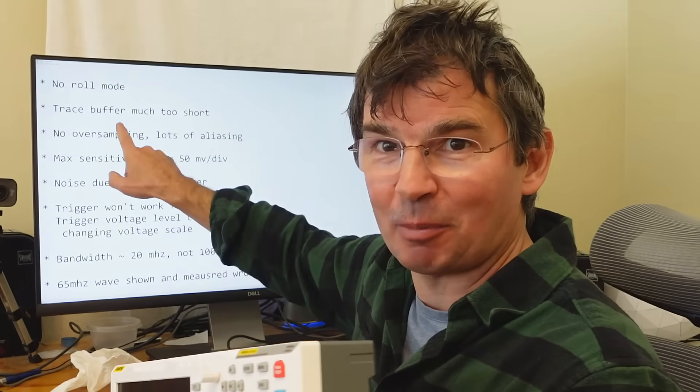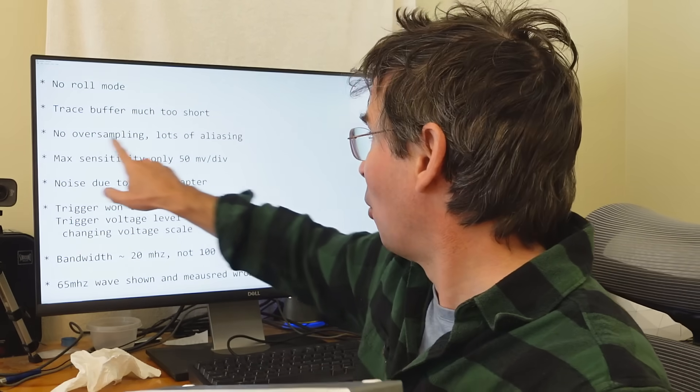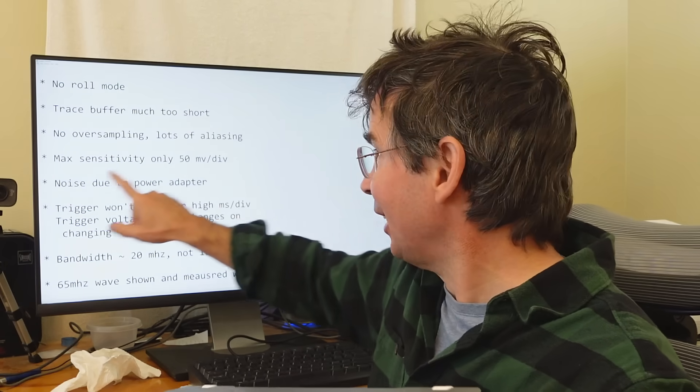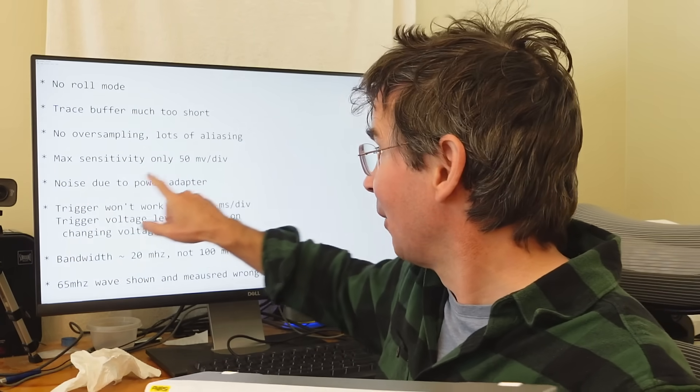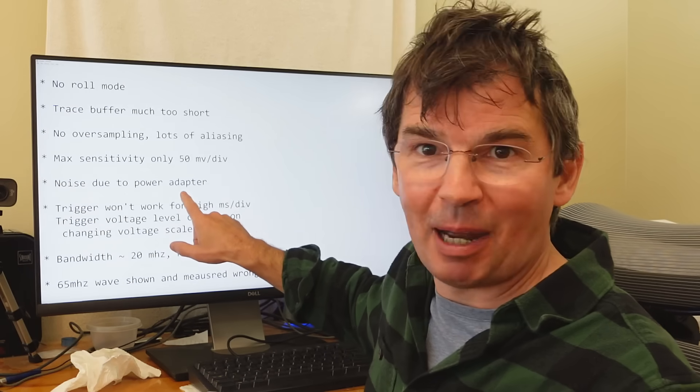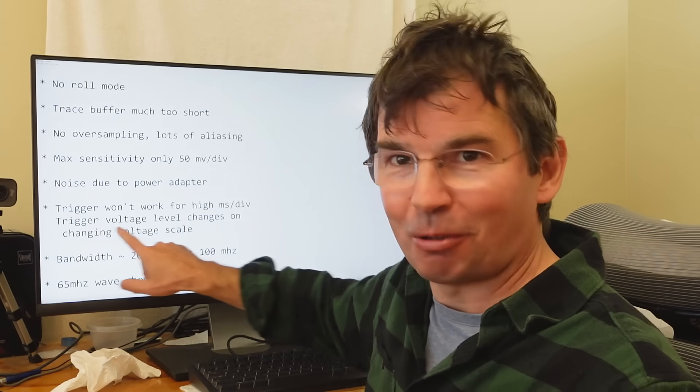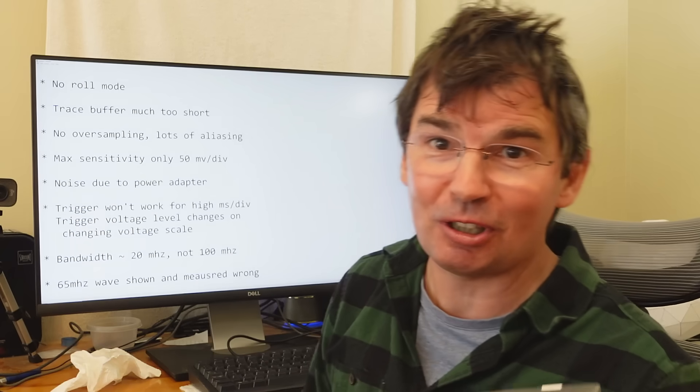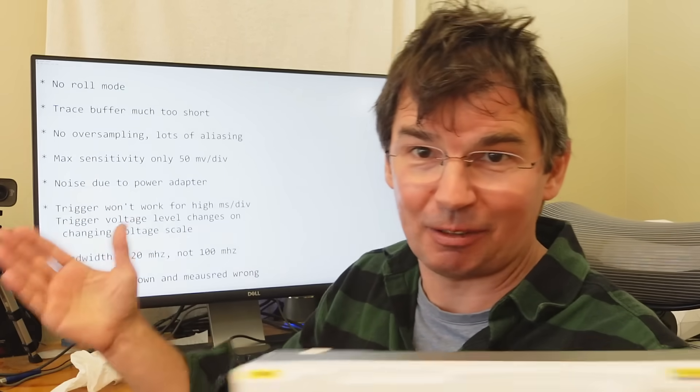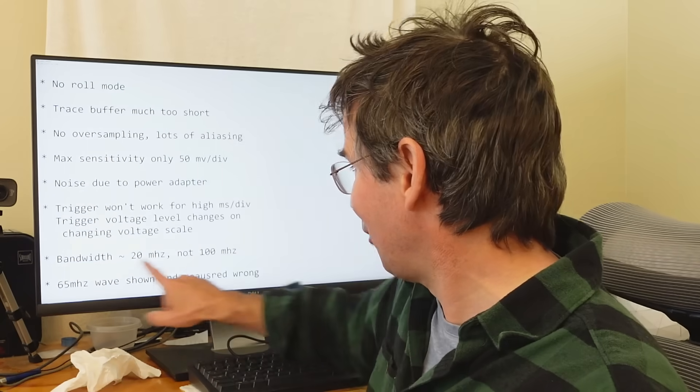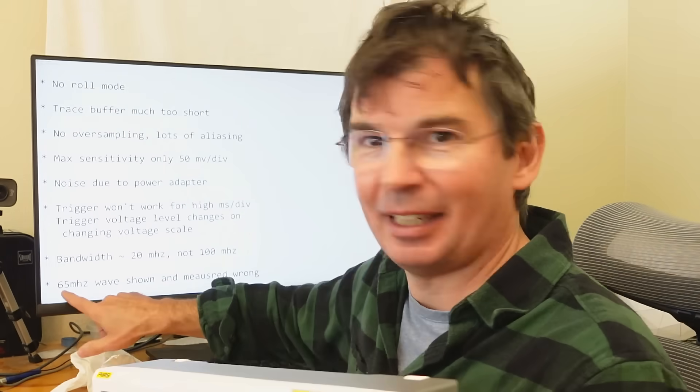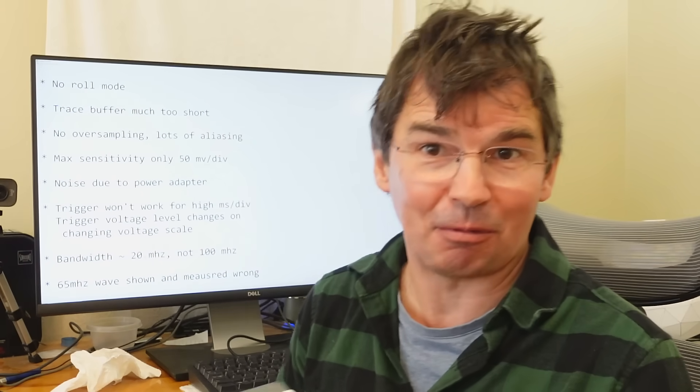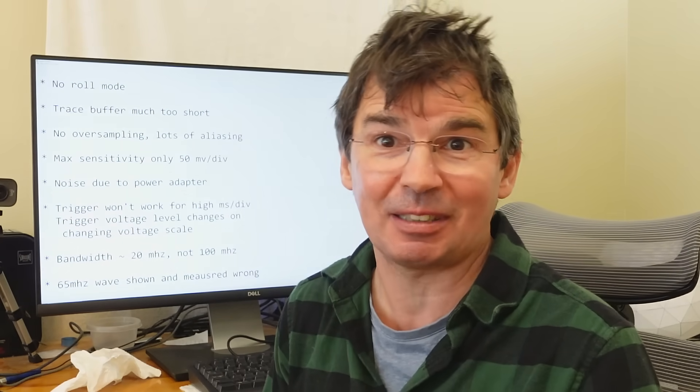So lacking roll mode, the trace buffer being way too short, no oversampling so you get lots of aliasing. The sensitivity only going to 50 mV, that's a big one. The noise from the power adapter. The trigger behaving funny if you change the voltage level or if you zoom out too much, like too long a time base. Bandwidth only 20 MHz. Again, not that big of an issue for me. And then it got the 65 MHz completely wrong. That's kind of like, okay, can I trust this thing at all?